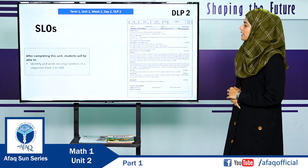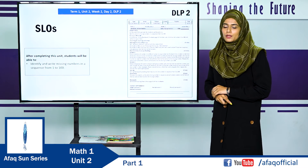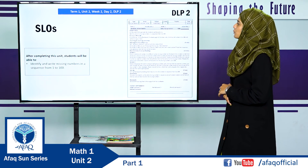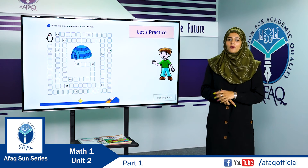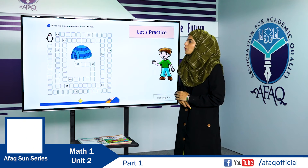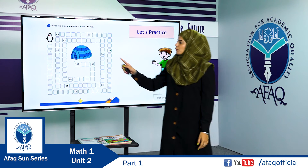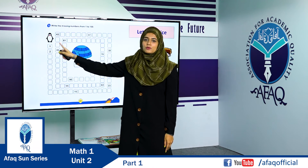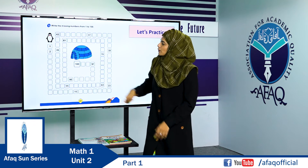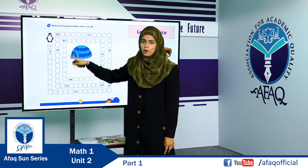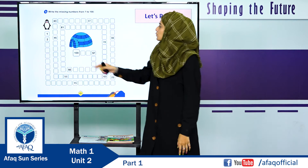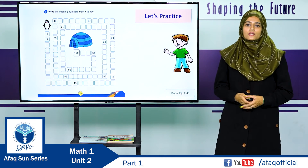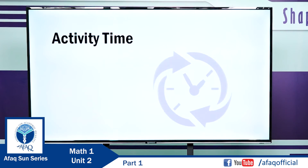In this SLO, we are going to identify and write missing numbers in a sequence from 1 to 100. The methodology has been provided in DLP 2, Term 1, Unit 2, Week 2, Day 2. On page 41, a penguin wants to reach its house. We fill in the boxes with numbers from 1 to 100 to help the penguin reach the igloo. Write the missing numbers by your own under the presence of your parents or teacher.